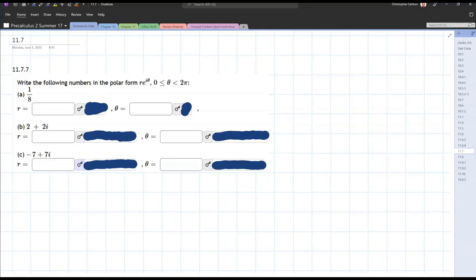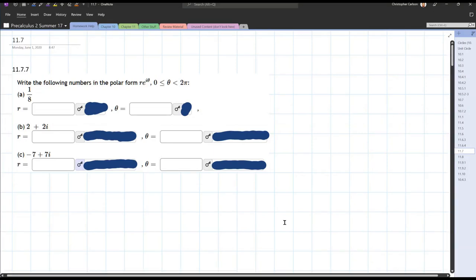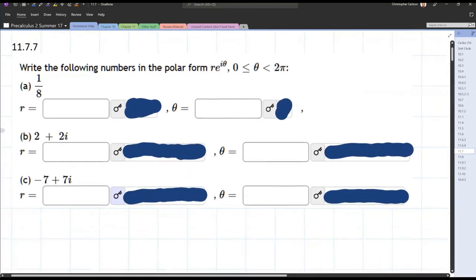We're about to convert some numbers from rectangular form to polar form. The first one is 1/8, and I'm actually going to hold off on that one and do it later. We're going to start with 2 plus 2i.